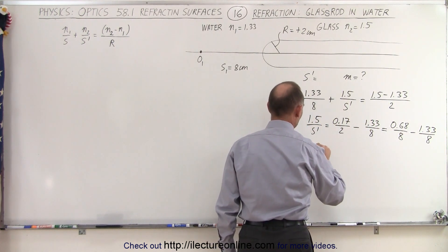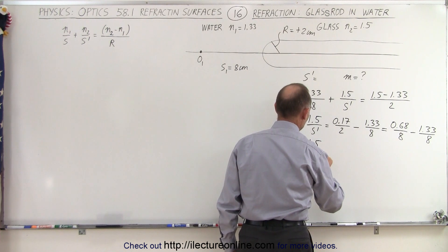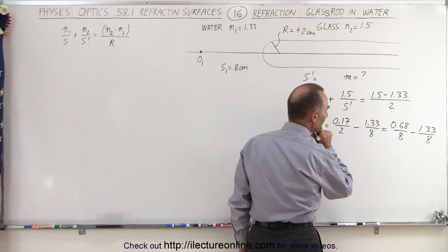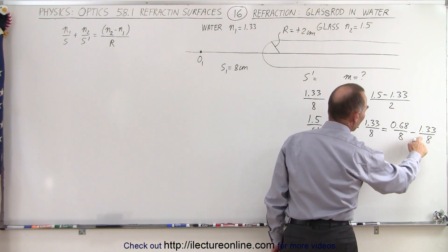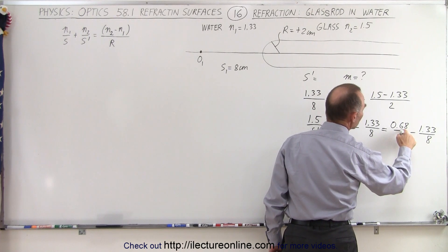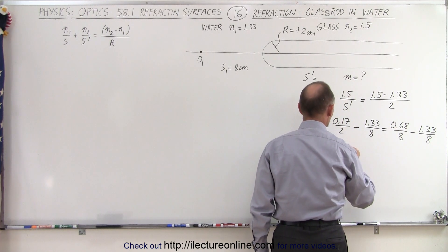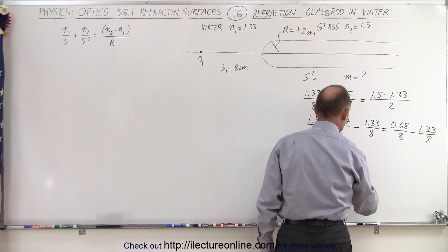We quadruple that, that would be 0.68 over 8 minus 1.33 over 8. And so we have 1.5 over s prime is equal to negative 0.65 over 8.